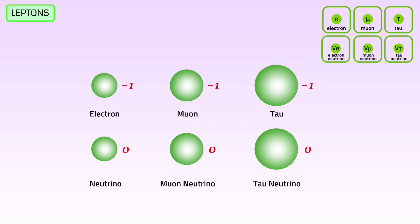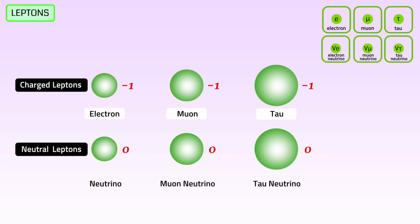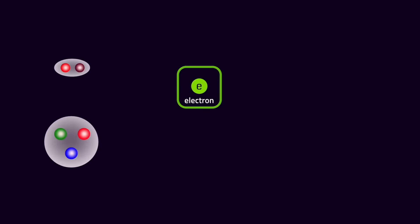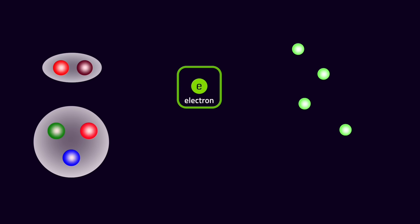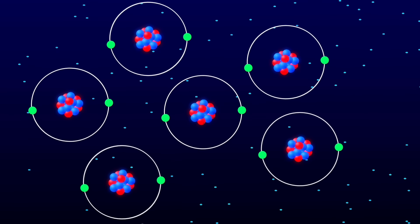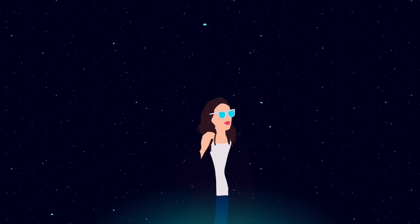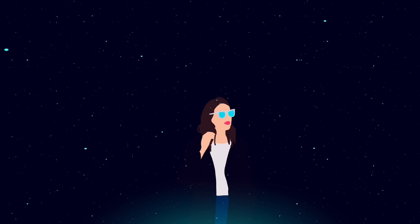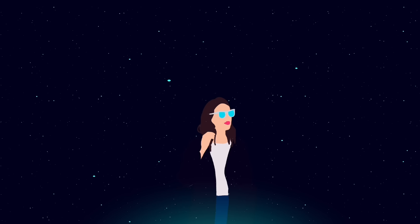We can divide leptons into two categories: the charged leptons, which have a negative charge — electrons, muons, and taus — and the neutral leptons, which carry no charge — electron neutrinos, muon neutrinos, and tau neutrinos. The electron is the only member of the lepton family involved in the formation of atoms. Quarks exist only as composite particles with other quarks, while leptons are individual particles. The size and mass of an electron are very small, approximately 9 × 10 to the power of minus 31 kilograms, or 0.5 mega-electron volts. Neutrinos are extremely small, being millions of times smaller than electrons, which is why they rarely interact with matter. Even though trillions of neutrinos pass through our bodies every second, they are undetectable by modern methods.